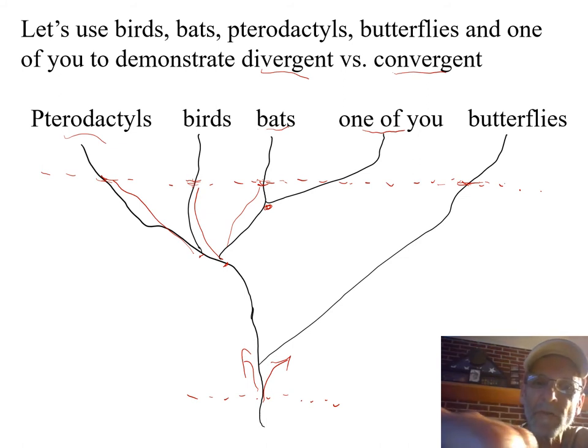The feathers versus stretched skin would be an analogous thing, a convergent thing, same function, but in a different way. These limbs have achieved the same function. But these are clearly analogous, not homologous,